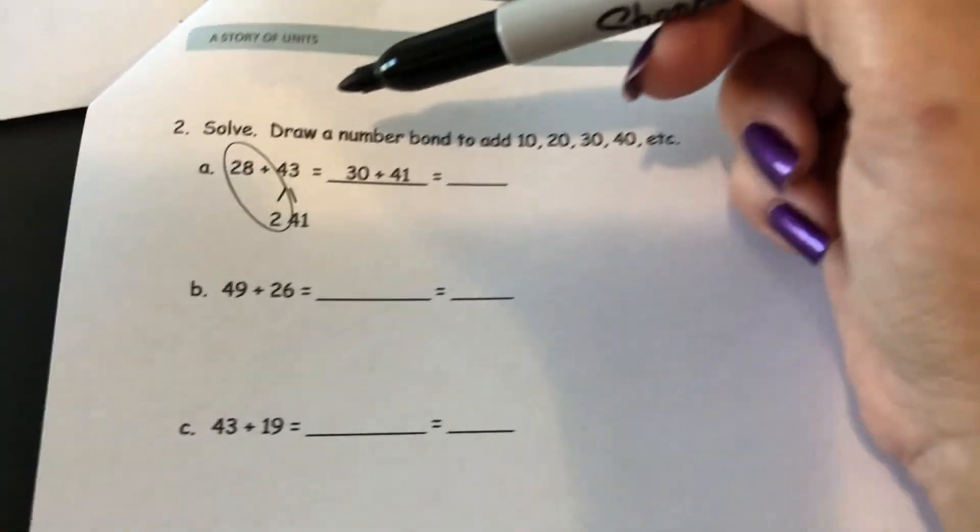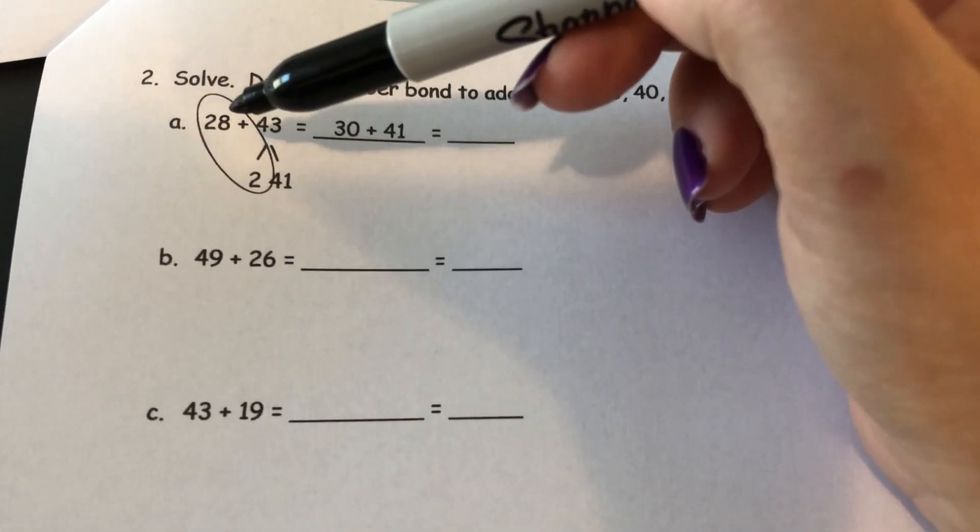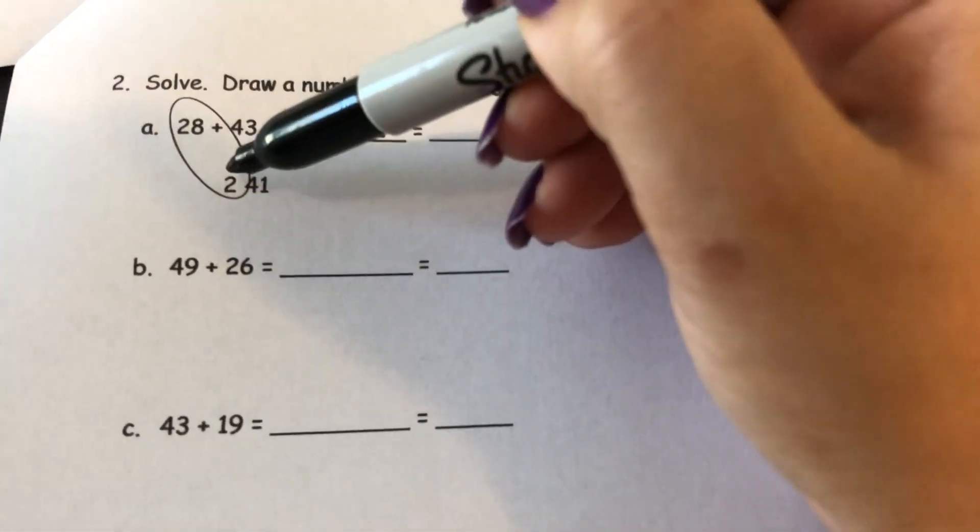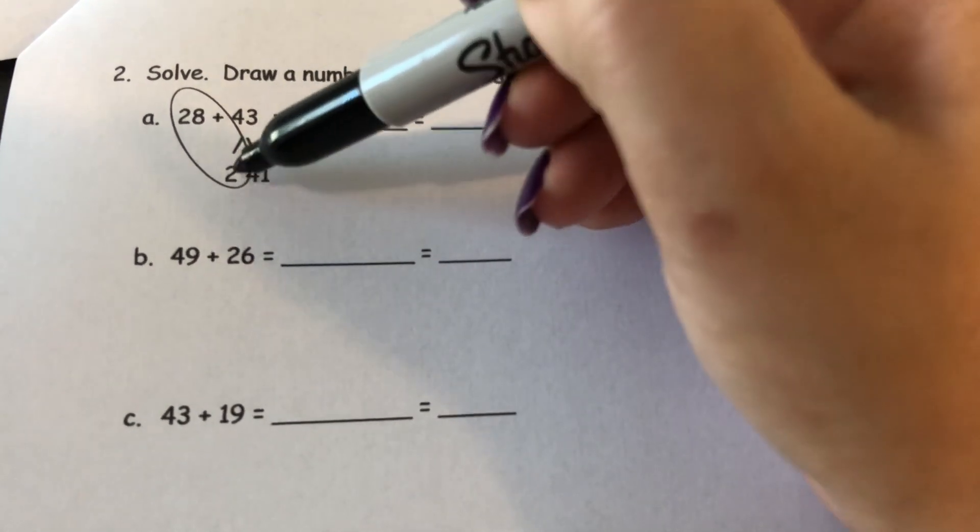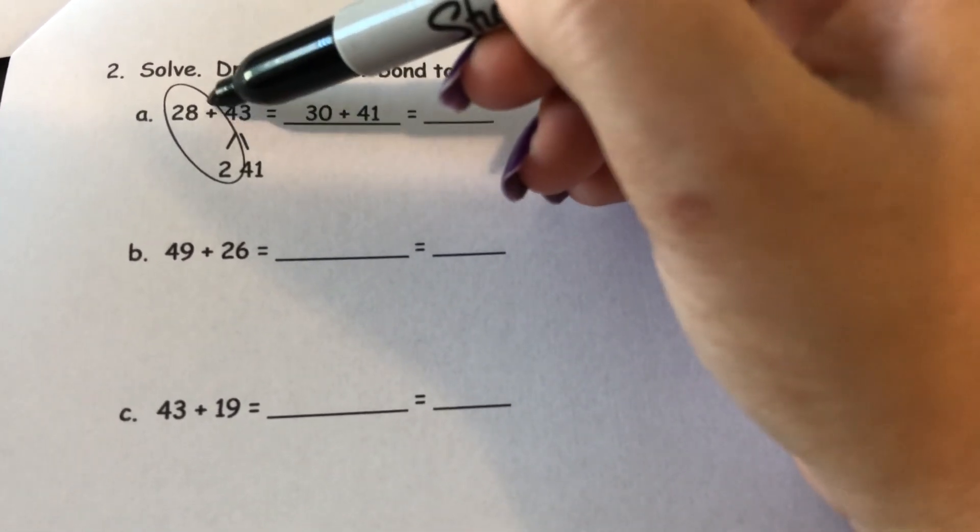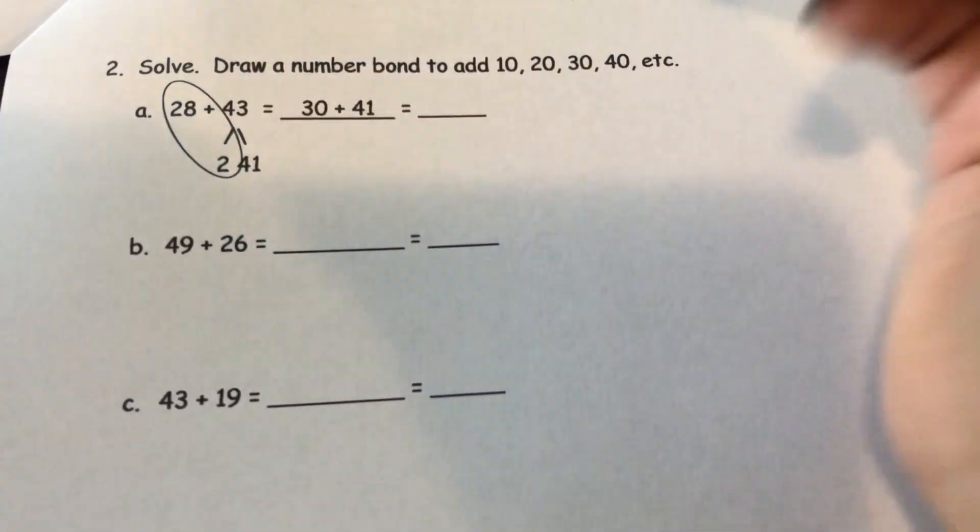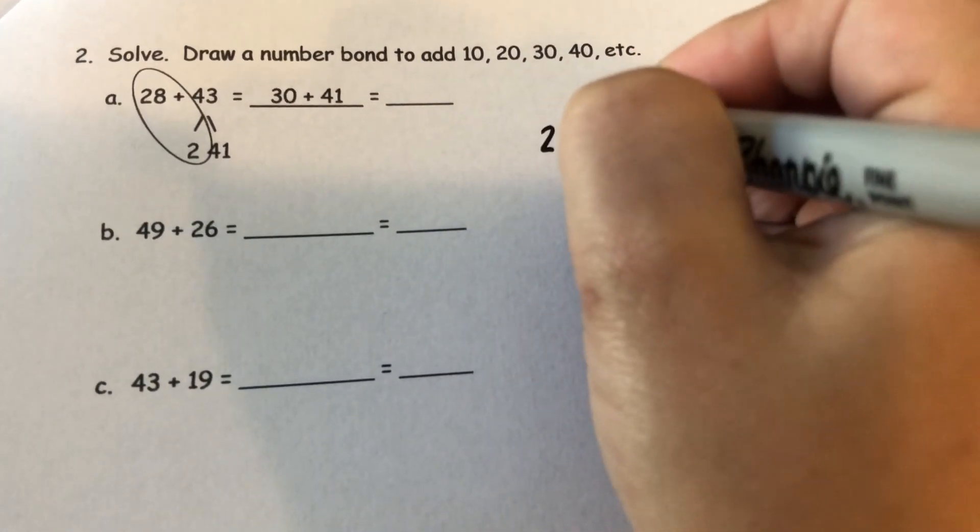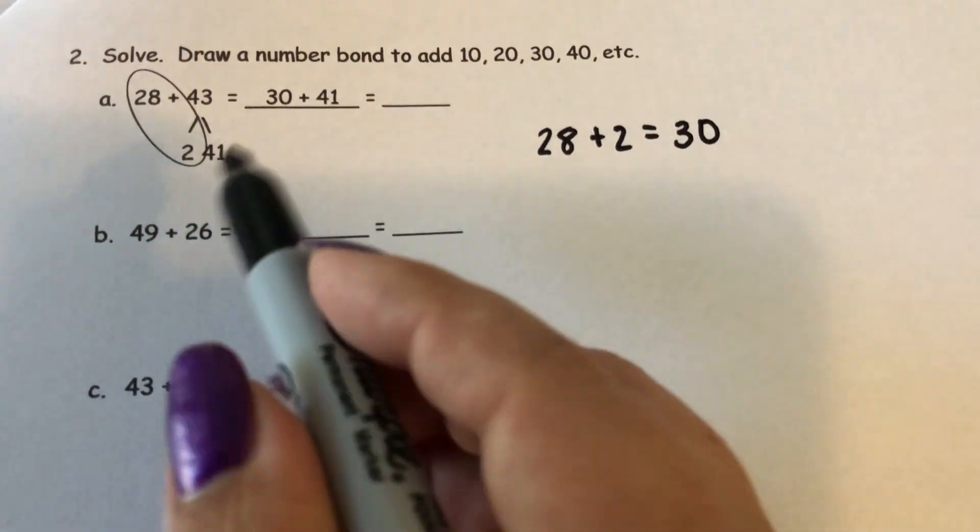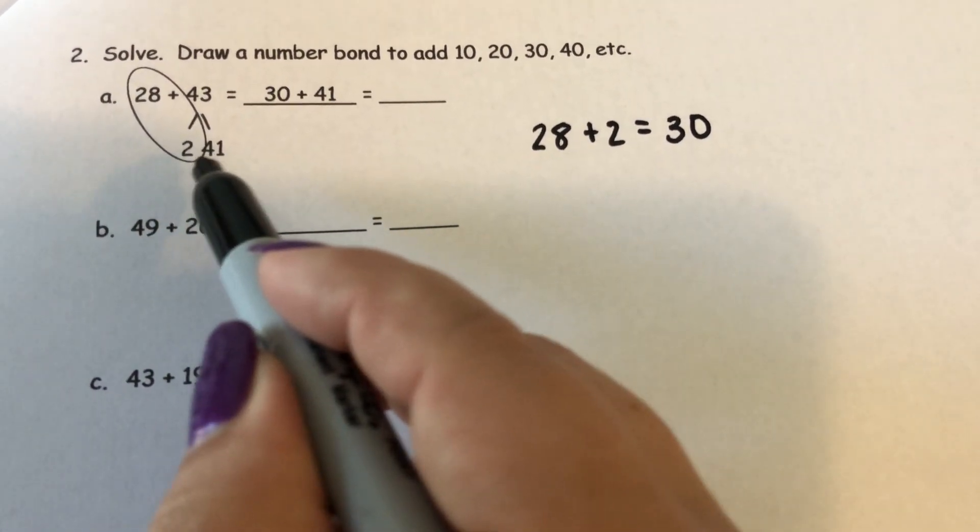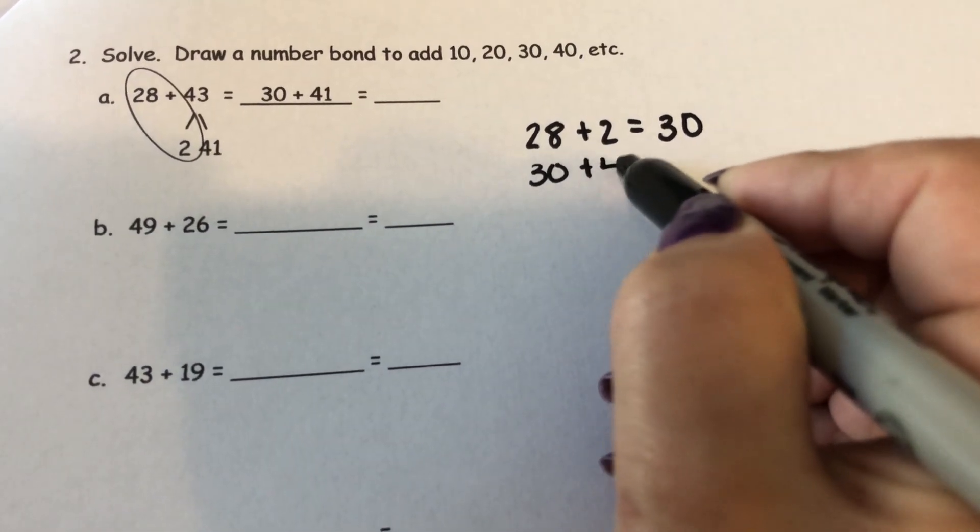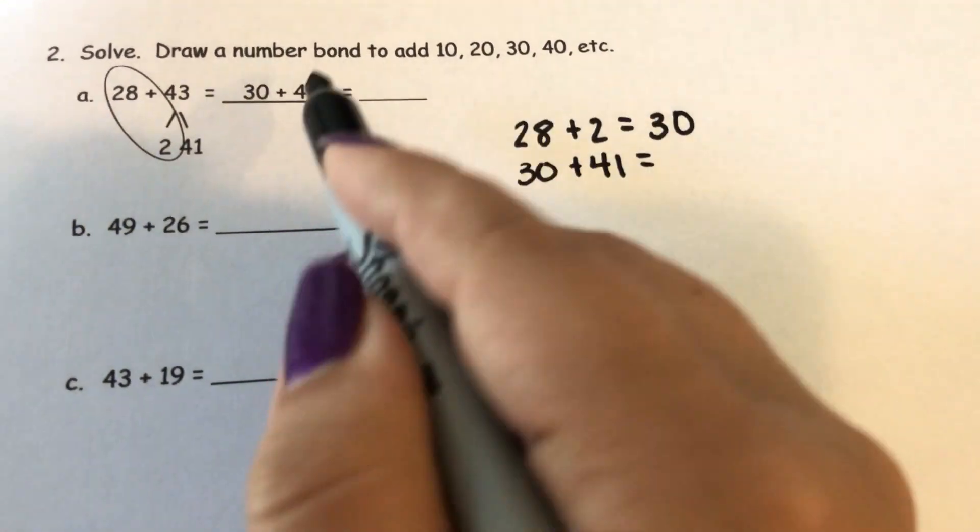So instead of using the 28, they made 28 into a multiple of 10 and then added from there. So they were thinking, well, 28 is really close to 30. How can I turn 28 into a 30? Well, I can take two 1s out of the 43, which leaves me with 41 left in 43. And they started by doing 28 plus 2. 28 plus 2 equals 30. So they've done this part, and they still had 41 left.